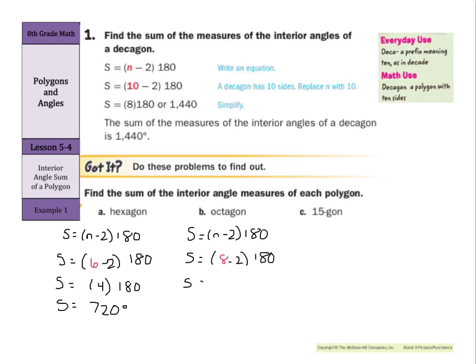And then S = 8 minus 2 is 6 times 180. And 6 times 180 is 1080 degrees.